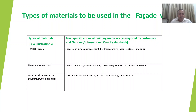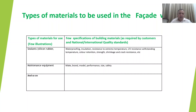Besides the various façade types, there is common hardware required — usually aluminum or stainless steel. Designers need to choose the make and brand, and this hardware needs to be aesthetically nice and stylish. They must specify size, color, coating, and surface finish. Sealants are very important — silicon rubber sealants should withstand the vagaries of nature, have waterproofing properties, insulation, resistance to extreme temperatures, UV resistance, color retention, strength, and shrinkage and crack resistance.